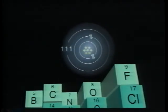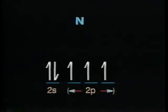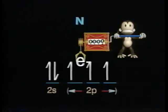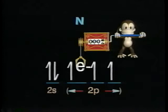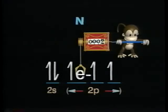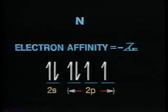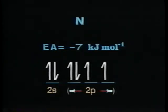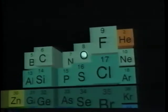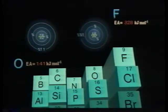The next element, nitrogen, has seven total electrons, only five of which are valence electrons. Two are in the 2s orbital and three are in the 2p orbital set. Forming a nitrogen anion requires placing the extra electron in one of the occupied 2p orbitals. The repulsion between the existing electron and the new electron is so large that energy is required in order to form the nitrogen anion. Seven kilojoules per mole of energy is required to form this anion. So the electron affinity of nitrogen is negative 7 kilojoules per mole. Moving to the right, the increased nuclear charge produces positive electron affinities for oxygen and fluorine, as expected from the periodic trend.